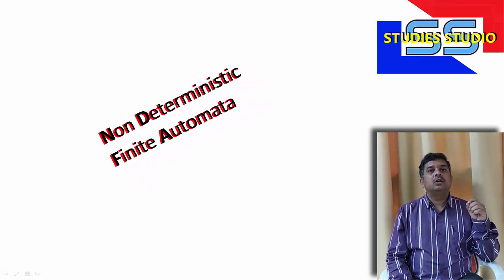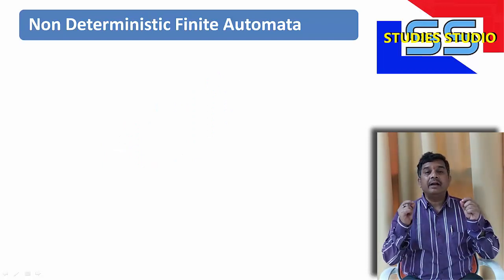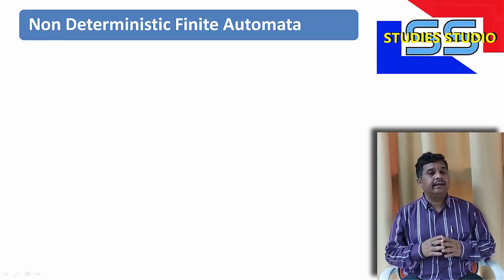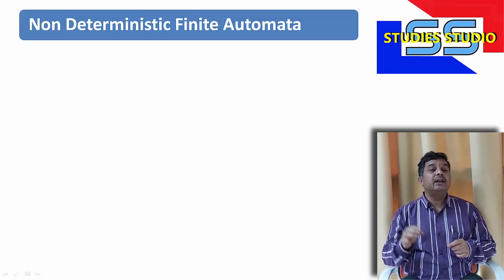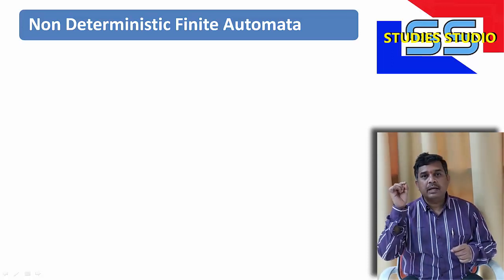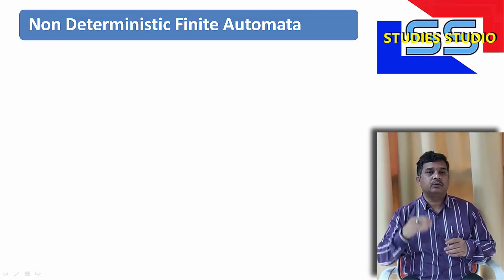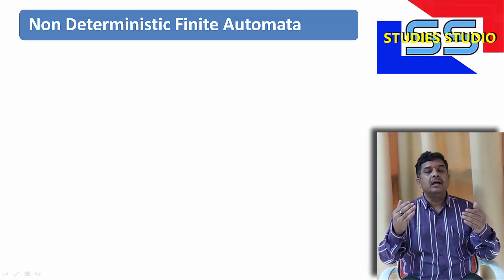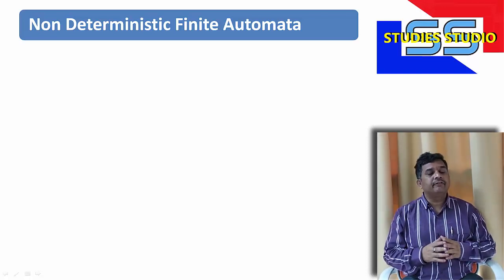What is Non-Deterministic Finite Automata basically? Till now, we have learned what is Deterministic Finite Automata. It means if we are in a particular state and we give a particular input symbol, then we will be going to our next state. We can deterministically say to which other state we are going. That is Deterministic Finite Automata.